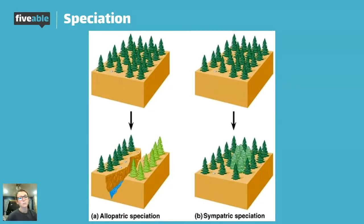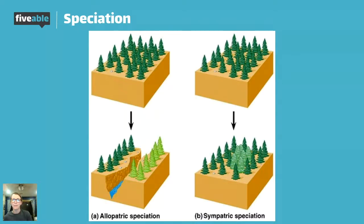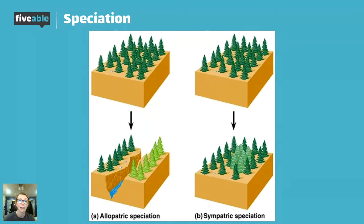For allopatric speciation, on the left you see a river has formed between this forest, and therefore we have two groupings of trees that are not near one another, so their pollen probably cannot spread. Remember that pollen is just plant sperm — so if you're allergic to plants, you're just allergic to their sperm. On the right-hand side, those trees have stayed in the same general area but we see a new species of trees creeping up in the middle.